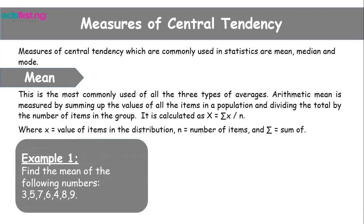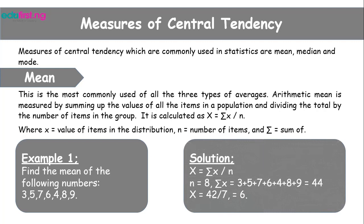The measures of central tendency commonly used in statistics are the mean, median and mode. The concept of mean: this is the most commonly used of all the three types of averages. Arithmetic mean is measured by summing up the values of all the items in a population and dividing the total by the number of items in the group.